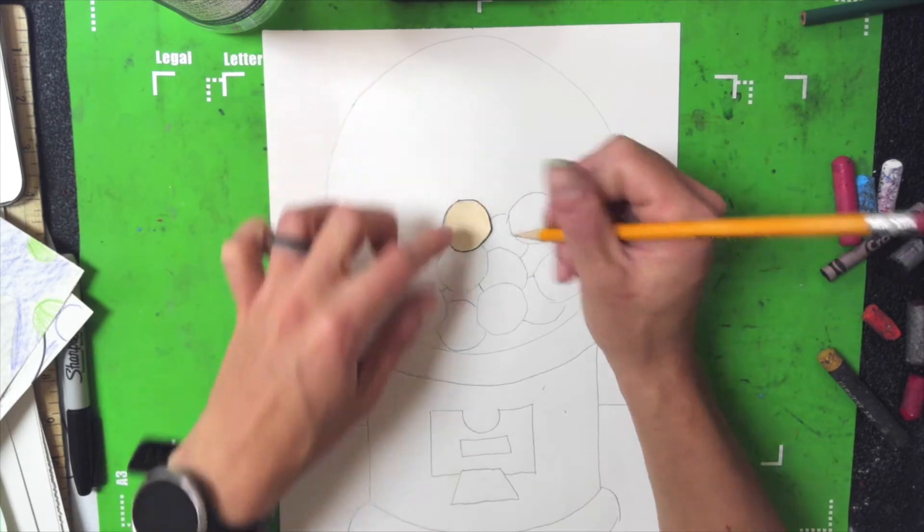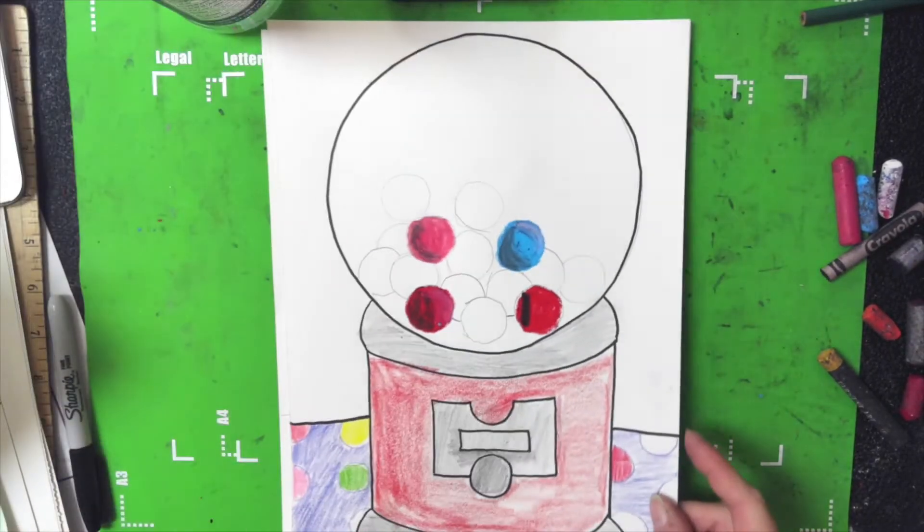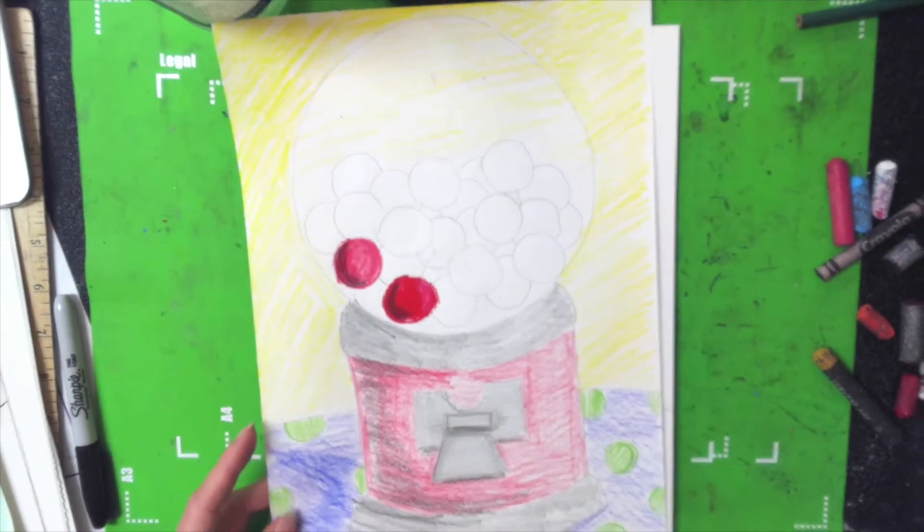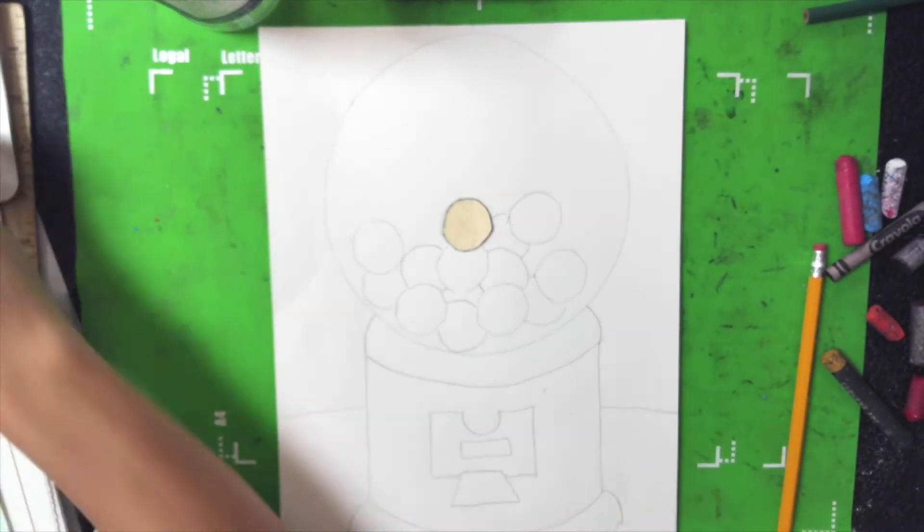If you want, you can trace your gumball machine in black, like I did for my first one. Or you can just leave it whenever we go to add color. I'm going to finish adding gumballs, and then I'll show you how to add the color.